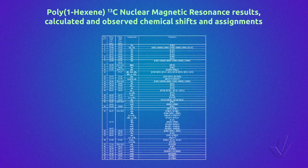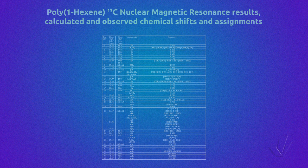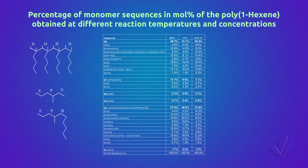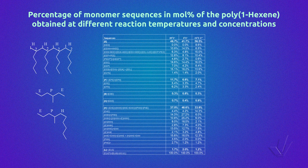In this table, it can be seen all the peaks, the calculated and experimental chemical shifts, the carbon atoms and the different sequences. Here are the equations used to determine all the sequences. Finally, here are the results of this analysis. This type of work lets us have an idea of the mechanism of the polymerization and the influence of temperature and monomer concentration on the distribution of sequences.